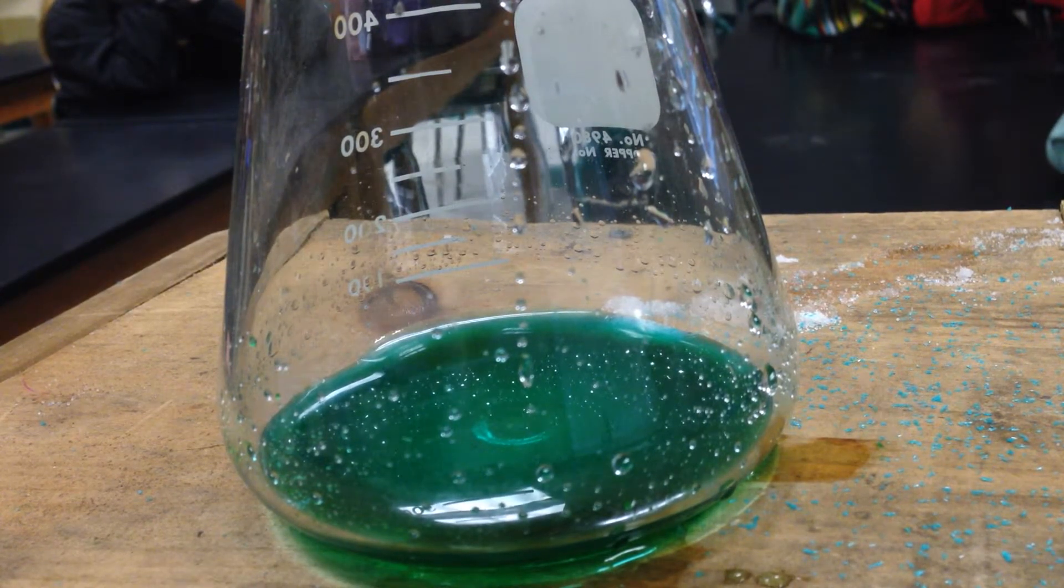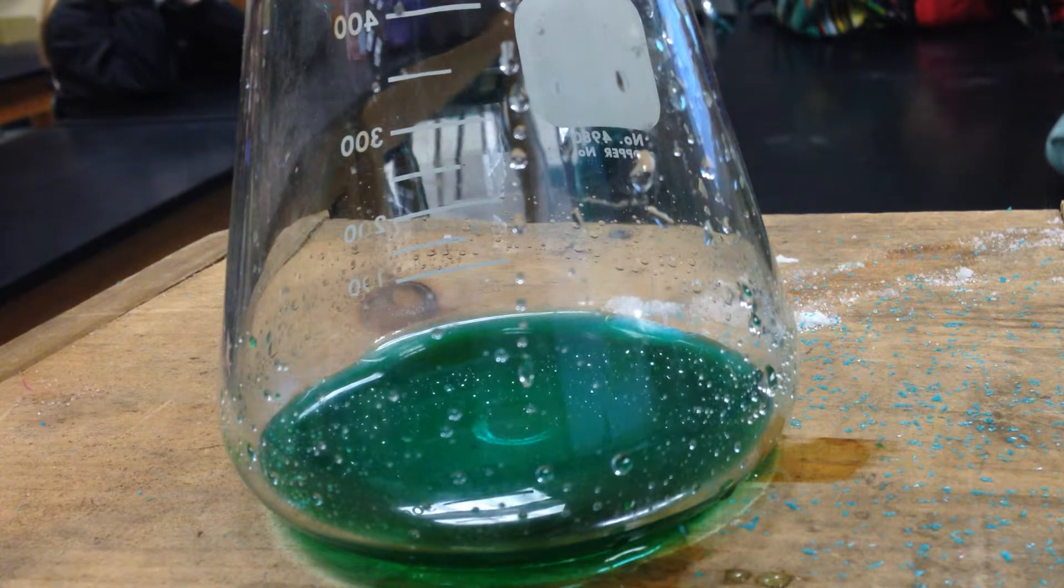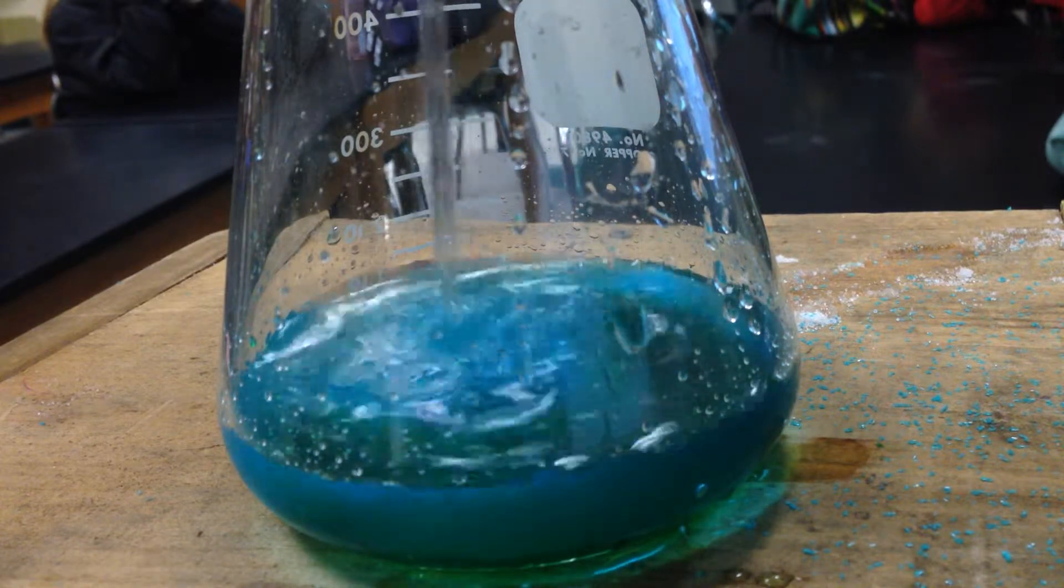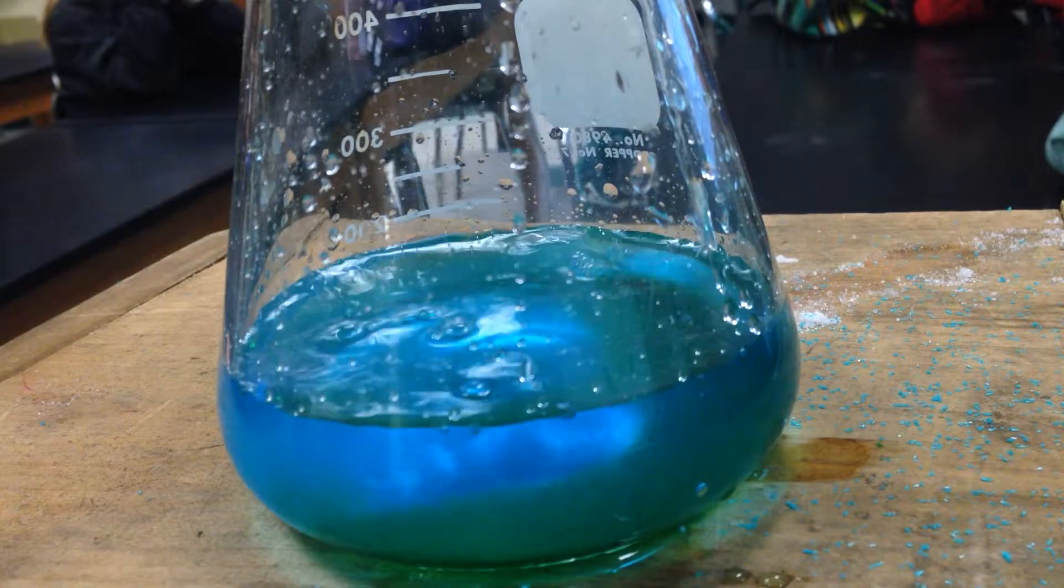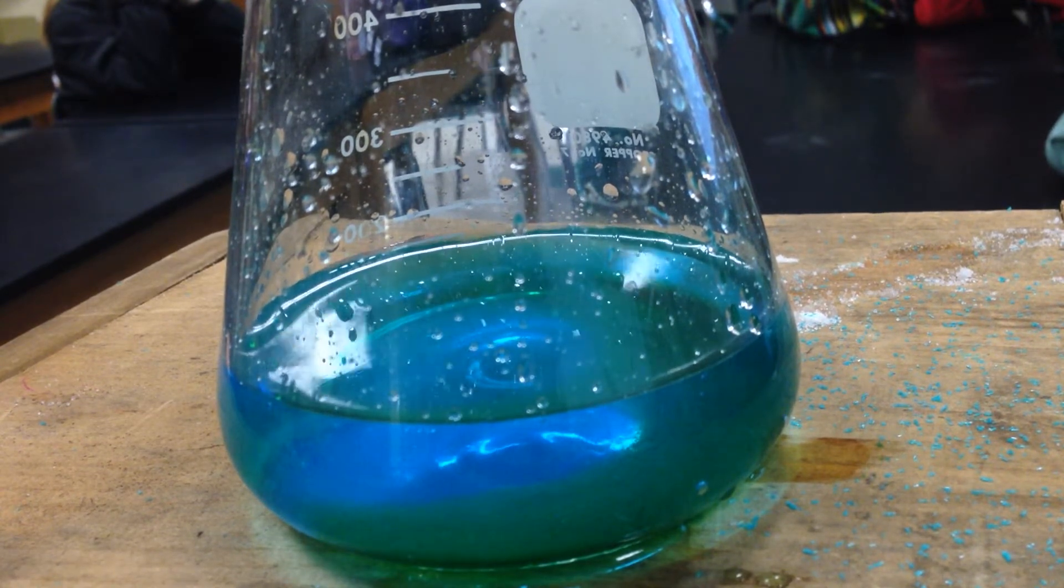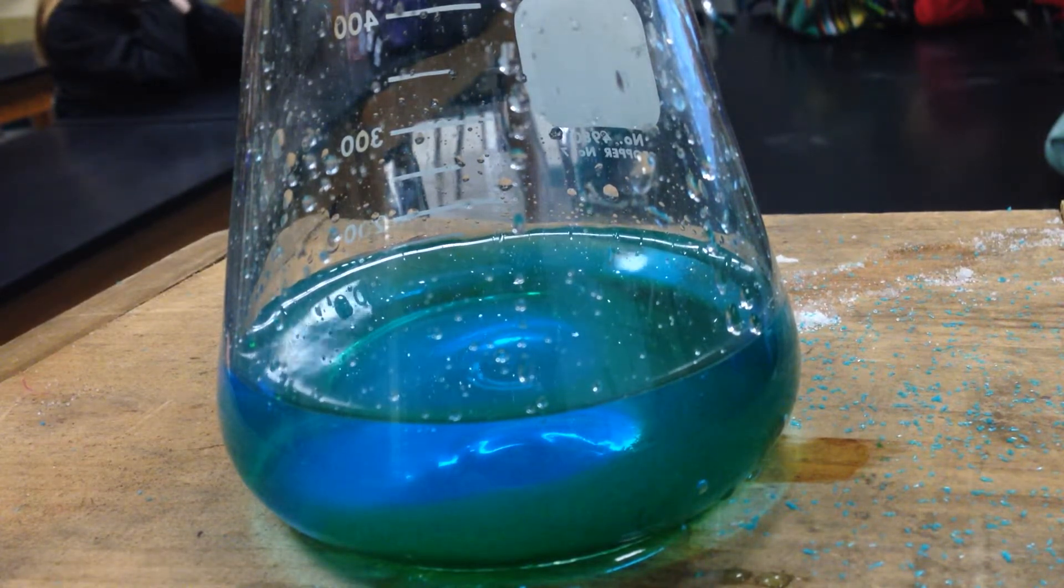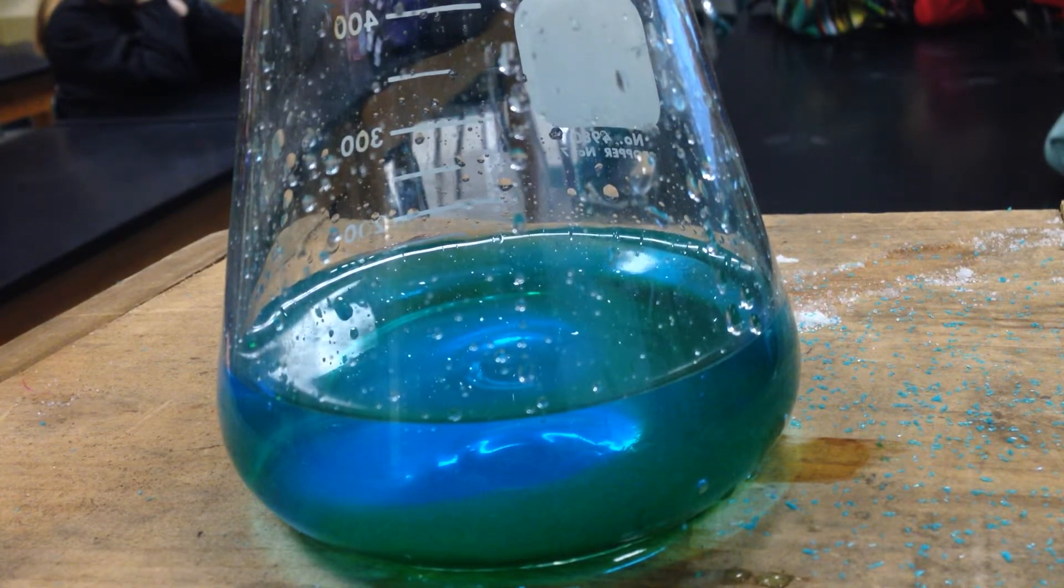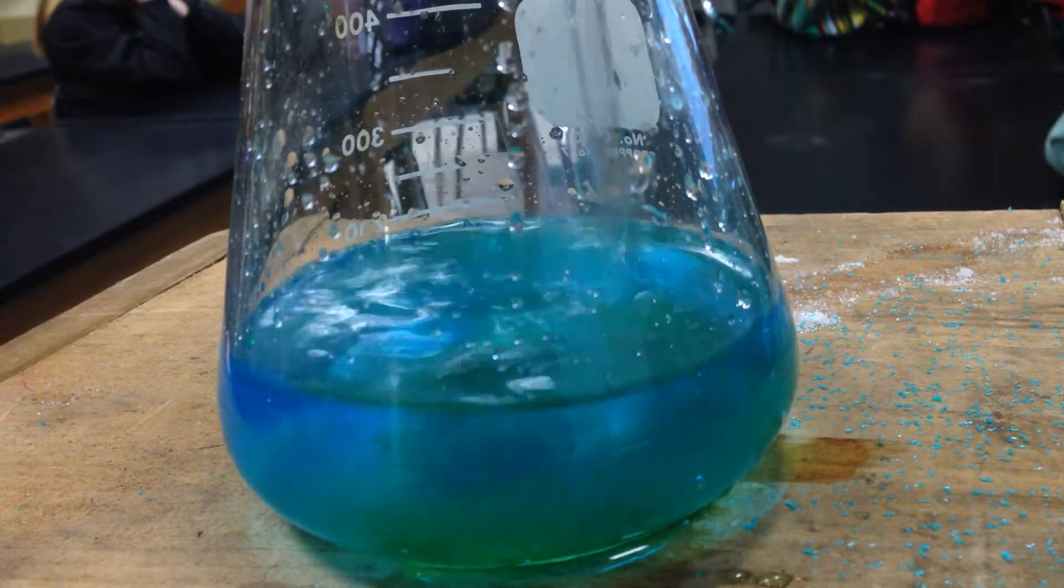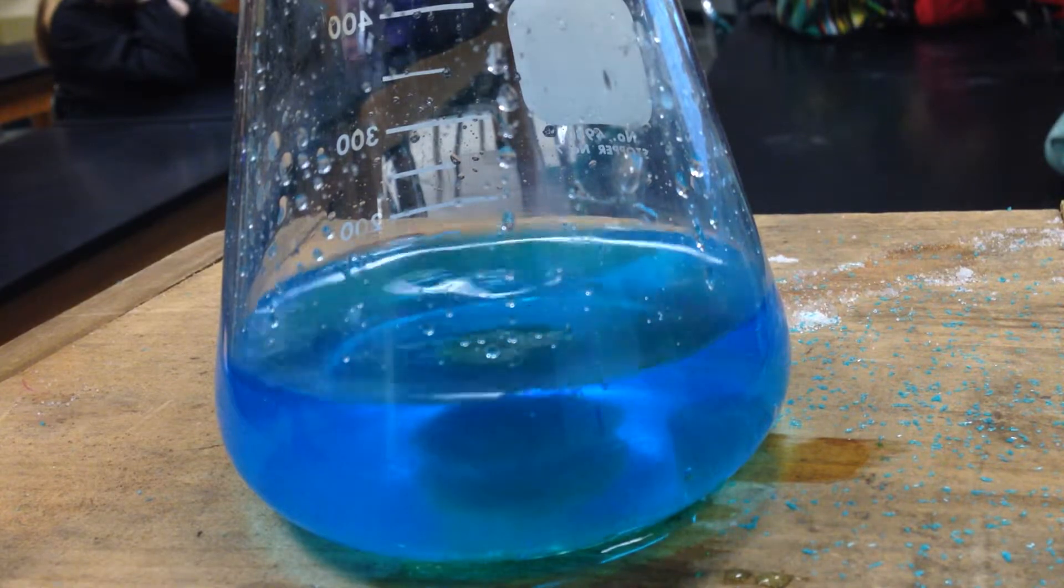But now as I pour more water, what happens to my color? Why is there a color change? Because now I have water being the predominant ligand onto the copper, and by changing the ligand, I change the amount of splitting. So this is going from green to blue, so what's happening, actually, is probably the gap is getting smaller to give off this retransmission of these photons. So by adding more water, I made the color change. So we're getting back to the original color of the hydrate, right?